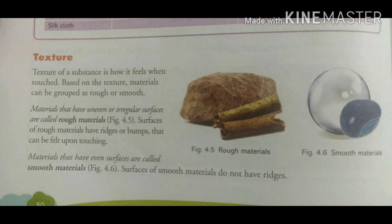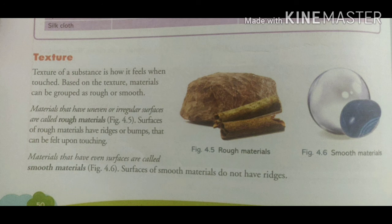The next property is texture. Texture of a substance is how it feels when touched. Materials with uneven or irregular surfaces — with ridges or bumps — are known as rough materials. Materials with even, plain surfaces are called smooth materials. For example, glass has a smooth surface, while tree trunks, rocks, and stones have rough surfaces.